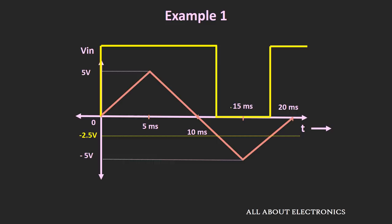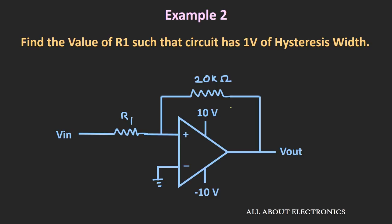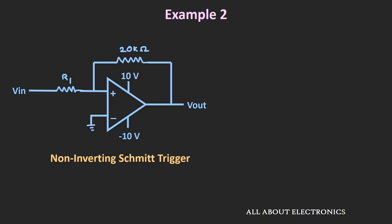Now let's move to the next example. We have been given this circuit and asked to find the value of resistance R1 such that the hysteresis width of the circuit is equal to 1V. Assume the saturation voltage is ±10V. If you observe this circuit, it is an example of a non-inverting Schmitt Trigger, because the input is at the non-inverting terminal and there is positive feedback from output to input.